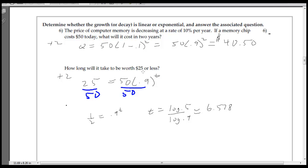And then how long is it going to take to be worth $25? Very similar to the other one. 25 equals 50 times 0.9 to the t, divide by 50 to isolate that term. And then we use that change of base formula. So the log of the left side divided by the log of the base. So log of 0.5 divided by log of 0.9 is 6.578. So it's going to take six and a half years about to be halved in price. The price of the memory is going to be halved in about seven years at that rate.